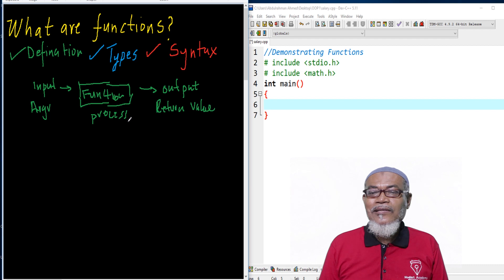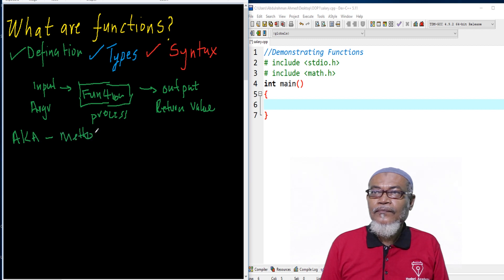This is a set of instructions which are taken by a function to be processed, and then they are output as a particular return value. Also, functions have different names. They are also known as methods, subroutines, and other books call them procedures.